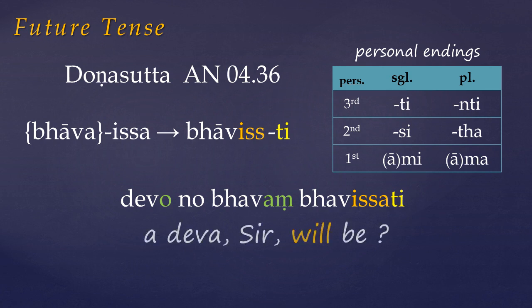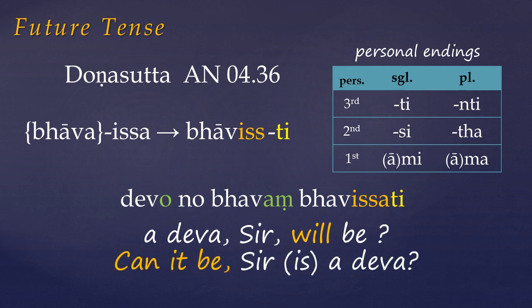Here 'Bhavang' is an appellation for the blessed one, meaning 'sir.' And 'no' I think here is just an emphatic. So Dona the Brahmin is asking the question: 'a deva, sir, will be?' Down the ages, translators have rendered this in various ways, but basically it means 'can it be, sir, is a deva?'